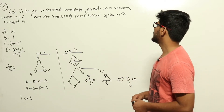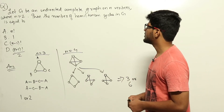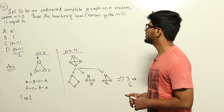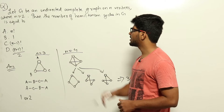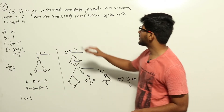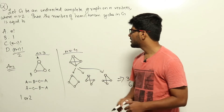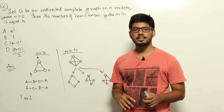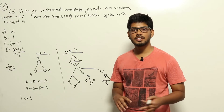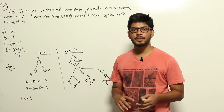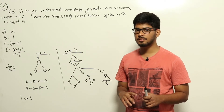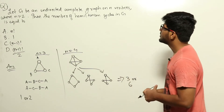Let G be an undirected complete graph on n vertices where n is greater than 2. The question asks for the number of Hamiltonian cycles in G. A Hamiltonian cycle is a cycle such that we start from one node in a graph, visit every node in the graph, and then come back to the same node.